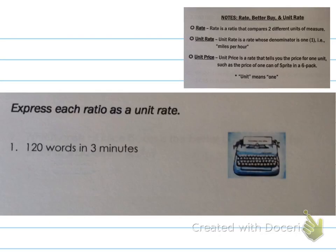Express each ratio as a unit rate. Well, the first thing I would suggest doing is referencing your notes to see what a unit rate is. So we're aiming for a denominator of one. And so our ratio here is 120 words in three minutes. Well, I want to know how many words I can do in one minute. So we need to have 120 words as our numerator and three minutes as our denominator. In order to figure out a unit rate, we can simplify this ratio.